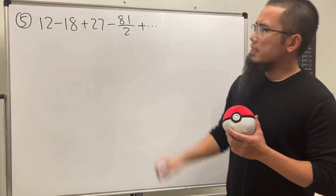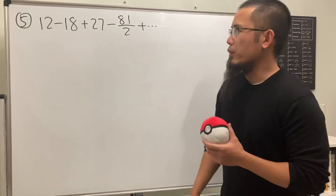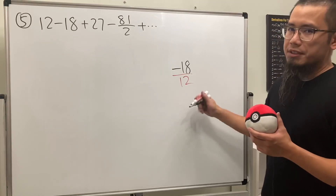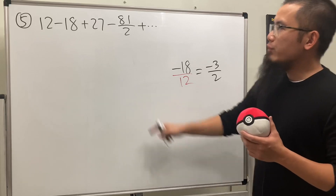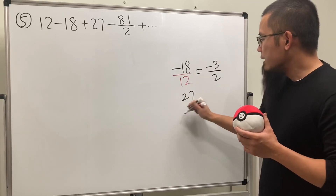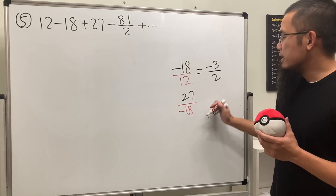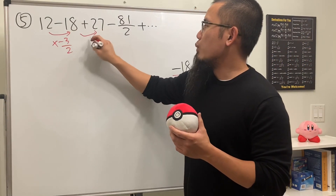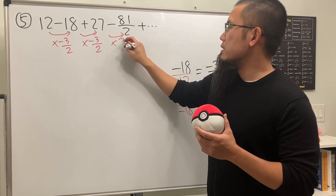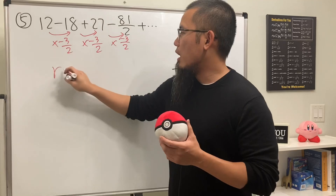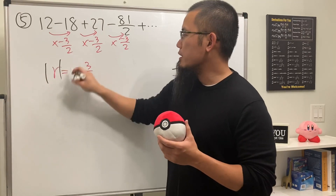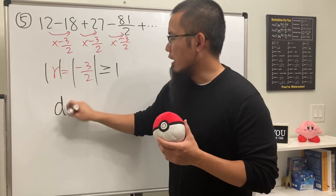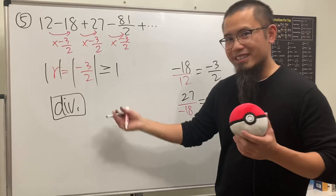For number five, if it's not easy to see the common ratio, divide one term by its previous term: negative 18 divided by 12 gives -3/2. Checking again: 27 divided by -18 also gives -3/2. So the common ratio r = -3/2. Taking the absolute value gives 3/2, which is greater than or equal to one, therefore this is a divergent geometric series.